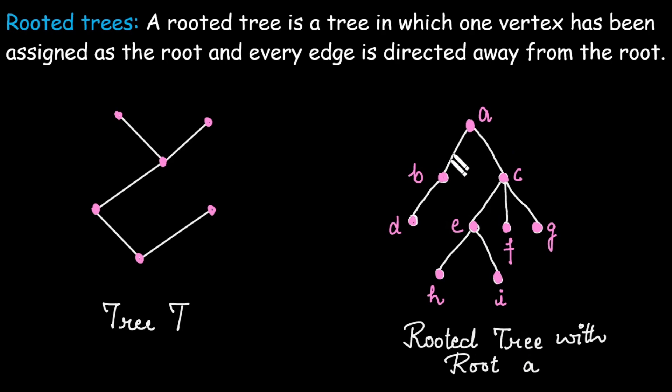It means once the root is assigned, every edge in that tree is considered as directed away from the root regardless of its position whether it is pointed towards the left or towards the right.